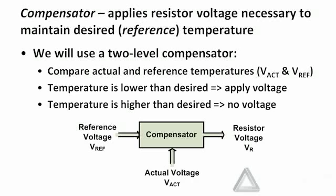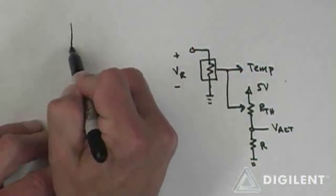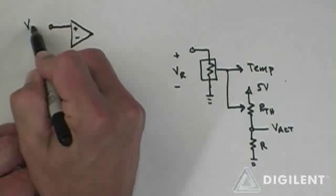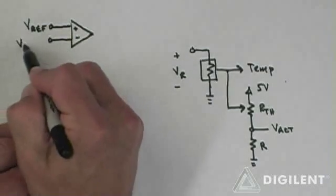One shortcoming of this control scheme is that I cannot cool my resistor to below room temperature, but that's okay — we're not going to use that as a design requirement. Our overall compensator is just going to be an on-off system; the output is either a high voltage or a low voltage. I can use an operational amplifier with no feedback to perform that switching operation. For example, on my circuit, if I take an operational amplifier and apply my desired voltage V_ref to the non-inverting terminal and the actual voltage V_ACT to the other...